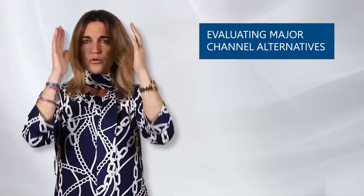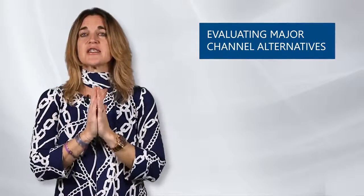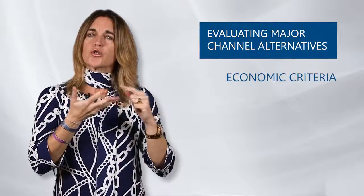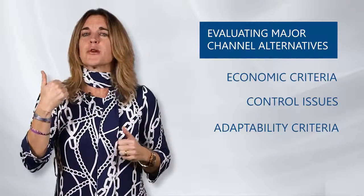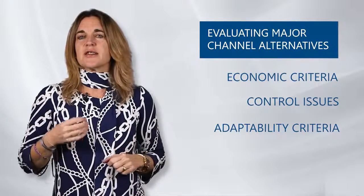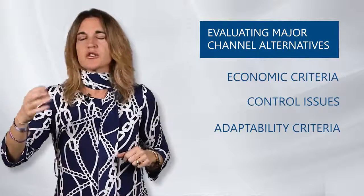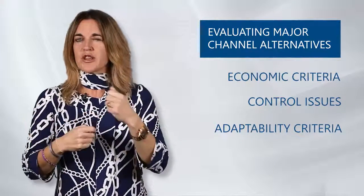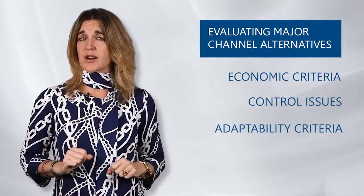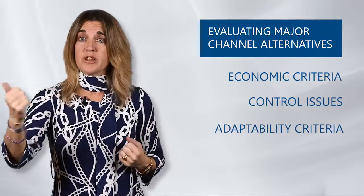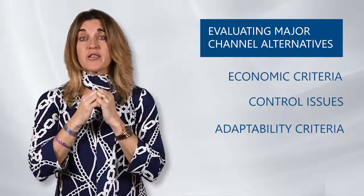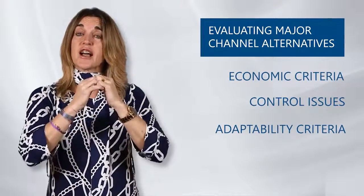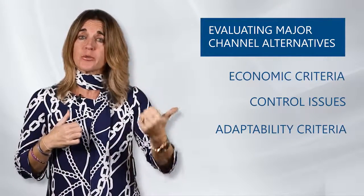The fourth aspect in designing a channel is that we need to evaluate these major alternatives. Each alternative should be evaluated against economic, control, and adaptability criteria. In economic criteria, we compare expected sales, cost, and profitability. In the control criteria, it helps us decide how much control to give to the intermediaries. Channels often involve long-term commitments; however, the company wants to keep channel flexibility to adapt to environmental changes. So if a long-term commitment channel is chosen, it must show clear superiority in economic and control terms.